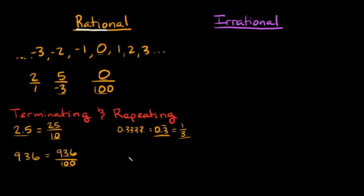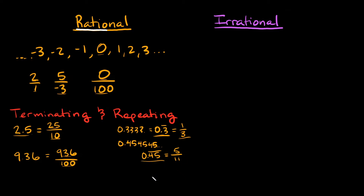Here's one more example of a repeating decimal: 0.454545 going on forever. I can rewrite this as 0.45 with a repeating bar over it. This is a rational number because I can rewrite it as a ratio of two integers: 5 over 11. So since 5 over 11 is a rational number, 0.45 repeating is also rational.